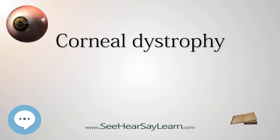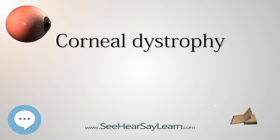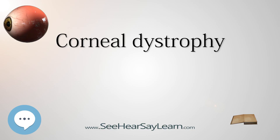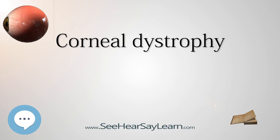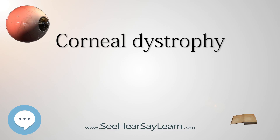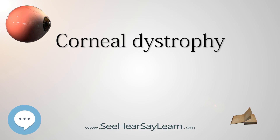Superficial corneal dystrophies: Meesmann dystrophy is characterized by distinct tiny bubble-like punctate opacities forming in the central corneal epithelium and peripherally in both eyes during infancy, persisting throughout life. In Reis-Bücklers corneal dystrophy, symmetrical reticular opacities form in the superficial central cornea at about four to five years of age, and the patient remains asymptomatic until epithelial erosions precipitate acute episodes of ocular hyperemia, pain, and photophobia.